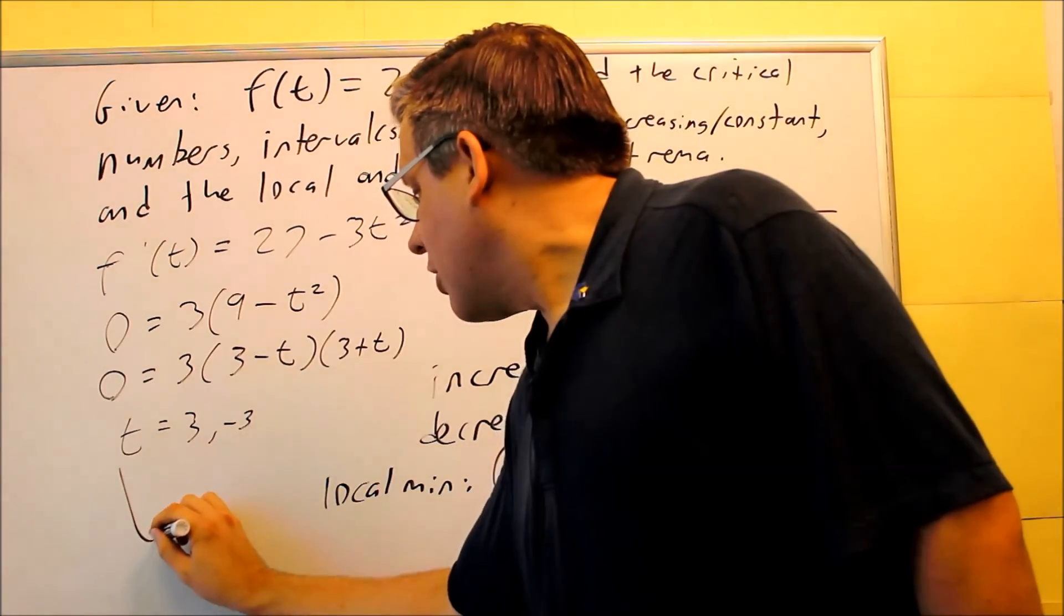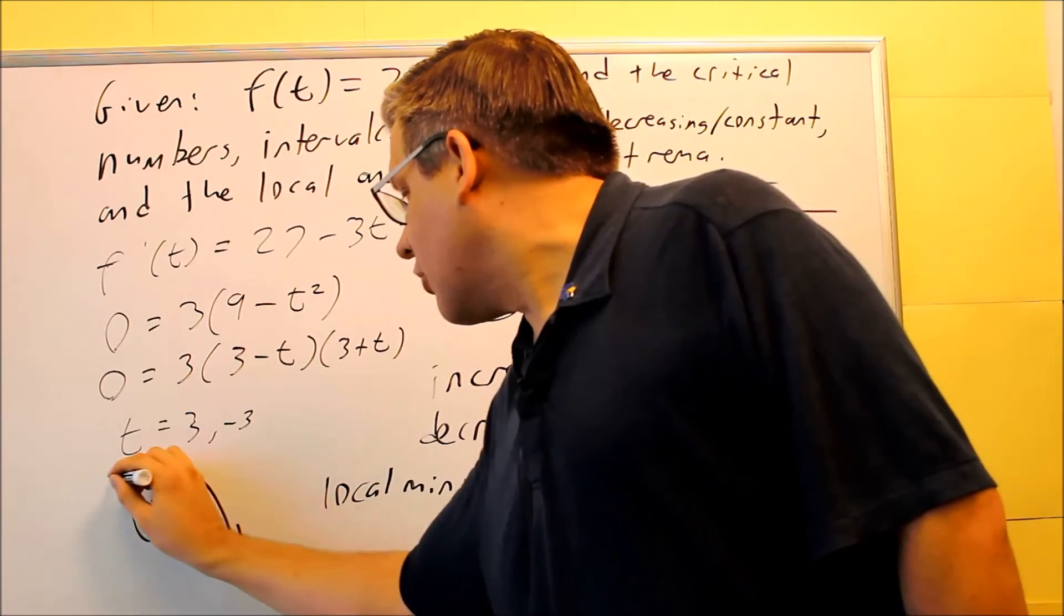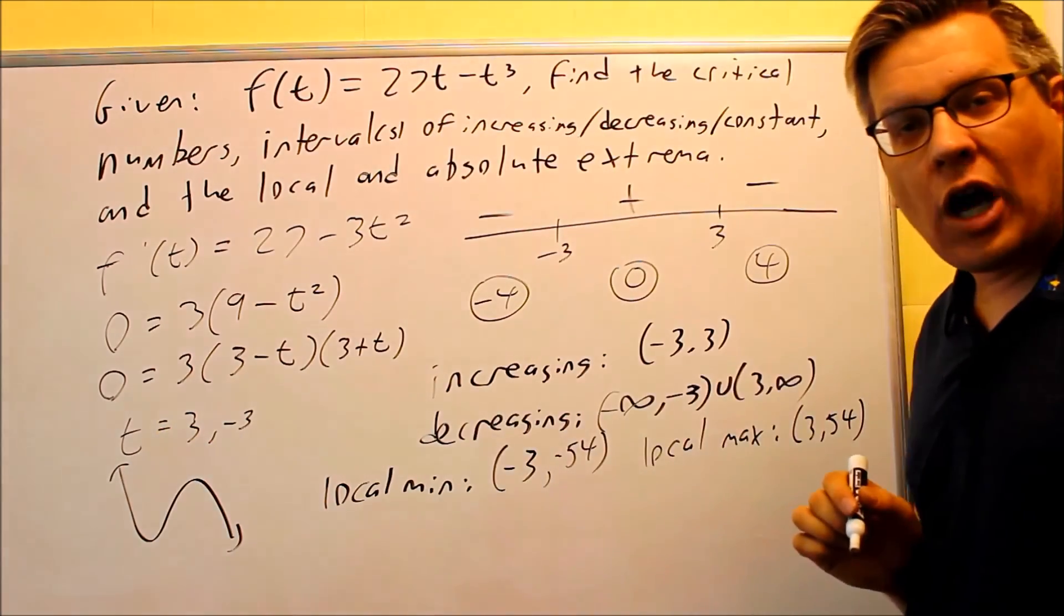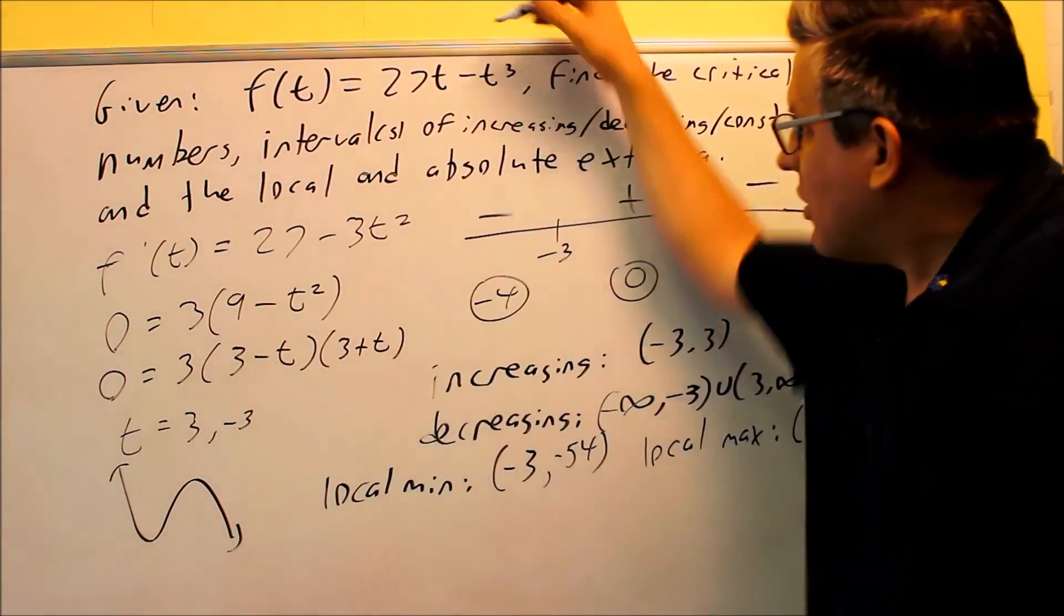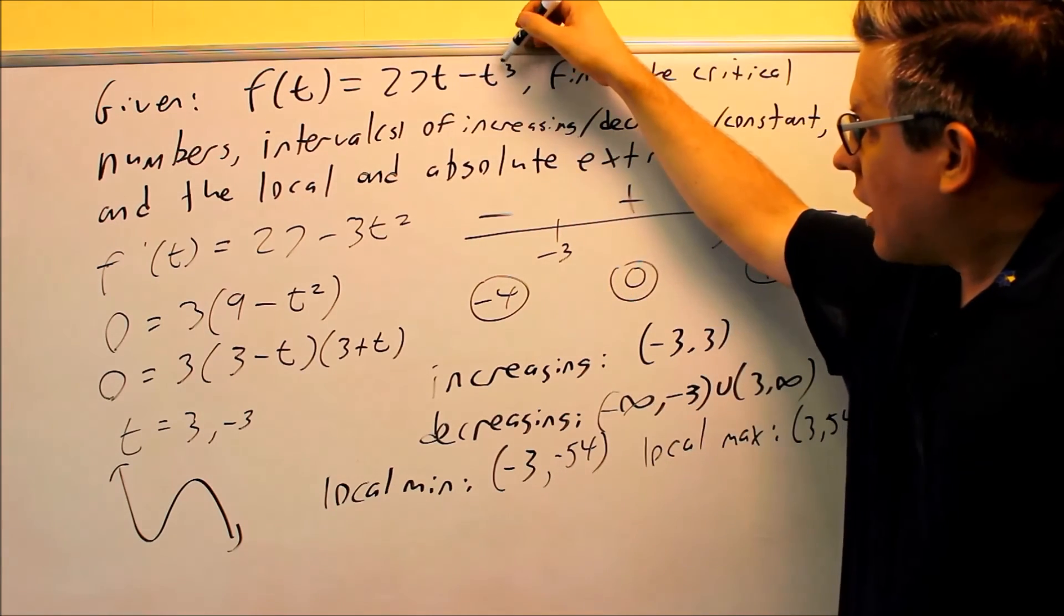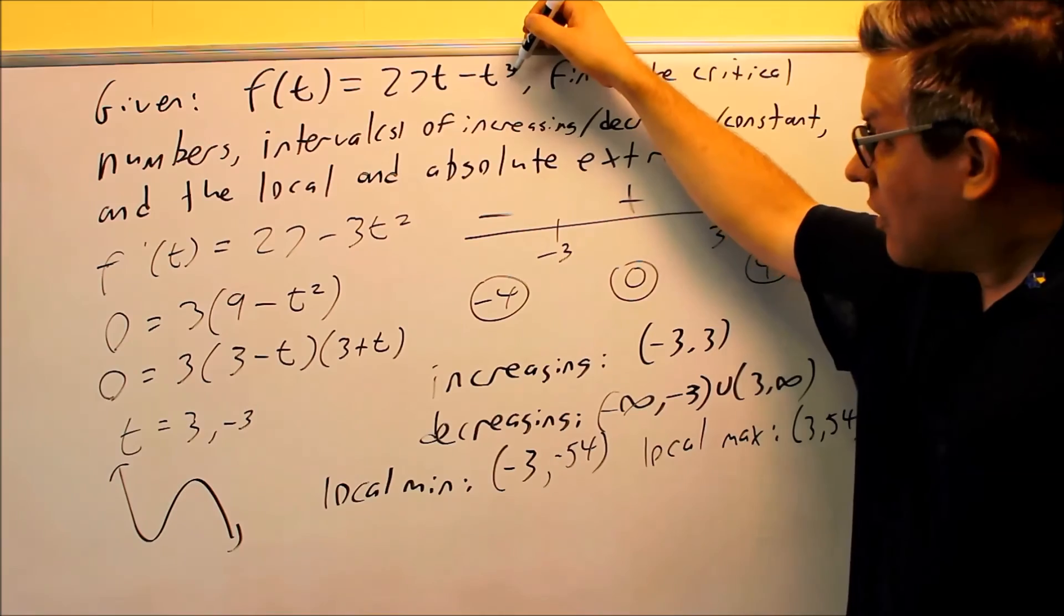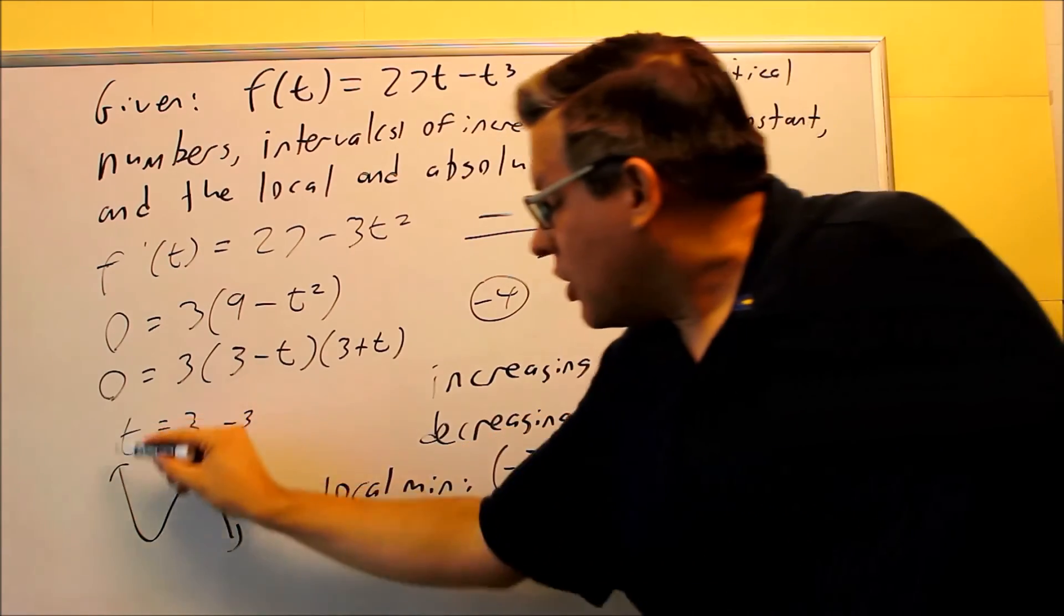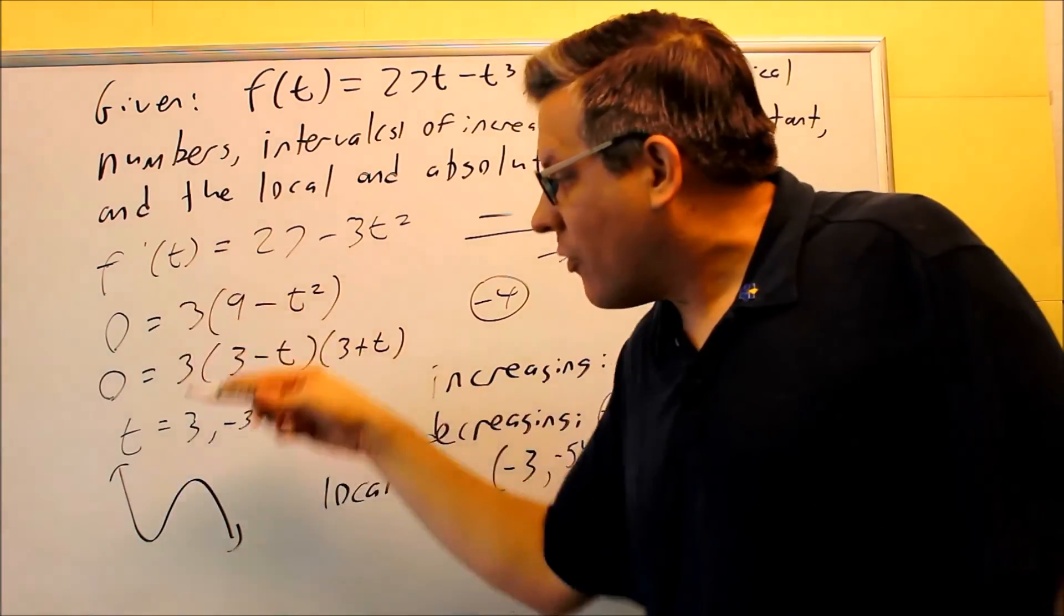The graph itself is going to look like this. If we wanted to get a picture of it, it's a cubic graph. A cubic graph that has a negative here in front of the coefficient with the t with the highest power. That's negative, which means it's going to be looking like this. It's going to go up forever and then down.